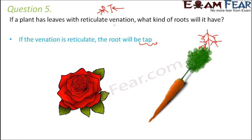Plants like rose and carrot have a tap root system with reticulate venation on their leaves.